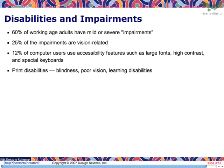For example, that means you might need to wear glasses to see the screen well enough to read it, or have reached an age where you need special reading glasses. 25% of the impairments are vision-related. 12% of computer users have to use accessibility features such as increasing the font size, changing the contrast, or using a special keyboard because their hands hurt using regular keyboards.